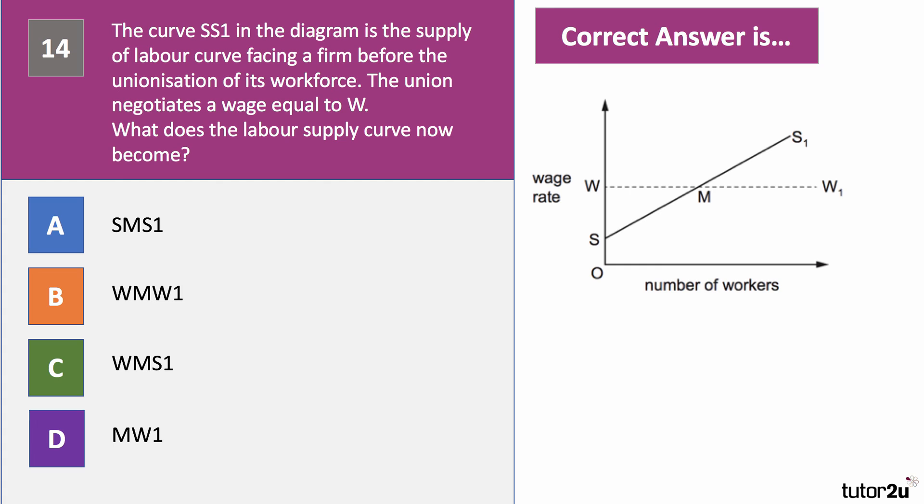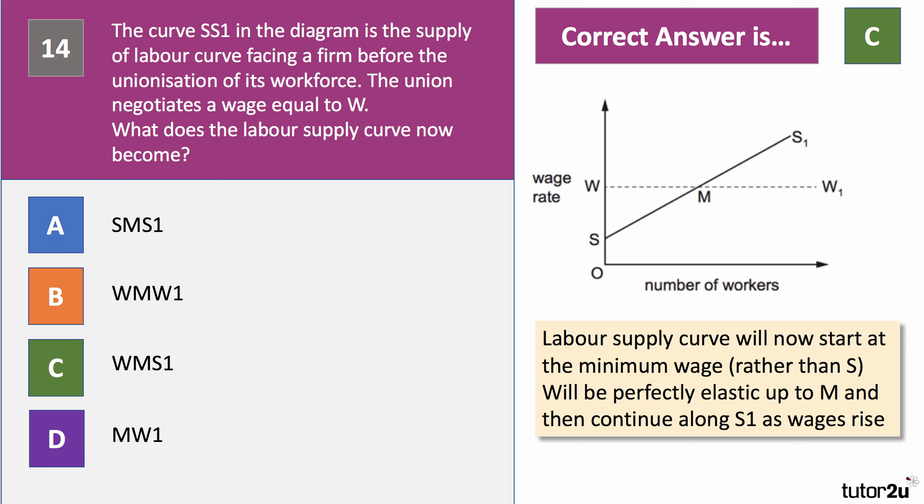Question fourteen, a labour market question. The curve SS1 in the diagram is the supply curve of labour for a firm before the unionisation of the workforce. The union then negotiates a wage increase equal to W. What does the labour supply curve now become? The labour supply curve started at S and went S, M, S1. It's not going to remain S, M, S1 because there's now a union-negotiated wage rate — you can't supply your labour at less than that wage rate. The right answer is C. The labour supply curve will now start at the minimum union wage W, be perfectly elastic up to point M, and thereafter continue up the supply curve as wages rise — so it's W, M, S1.